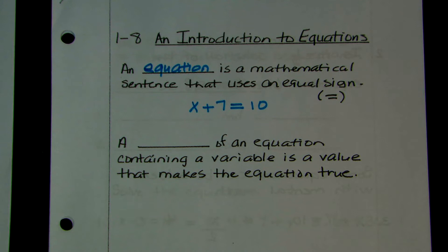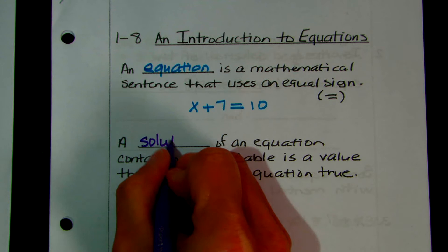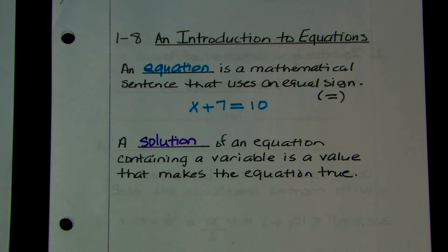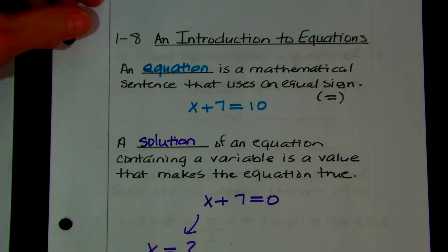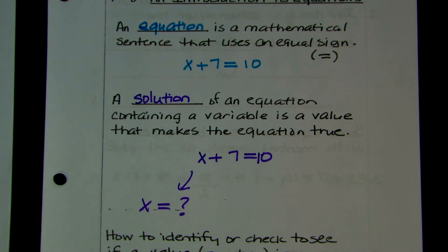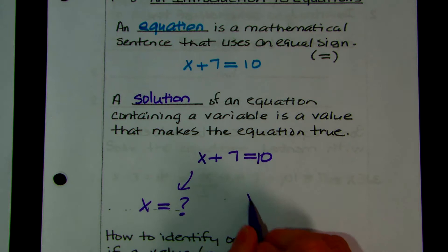A solution to the equation is a value that makes the equation true. So you pick a number — when you put it in place of the variable, it makes the equation true. For these, you can probably just see what the solution is. What would x have to be to add to 7 to equal 10? You can probably tell me that x would have to be 3. So that would be your solution.